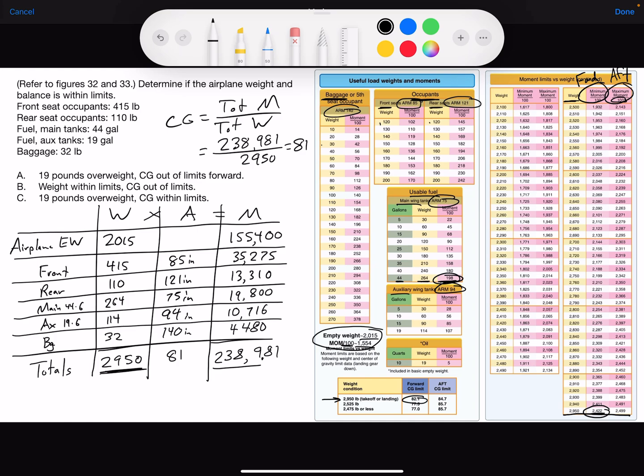So our CG is positioned at 81, which is forward of the forward limit right here on the table. So we are within weight limits, but the center of gravity is too far forward. CG is out of limits, so answer bravo is the correct answer.